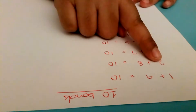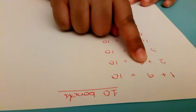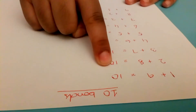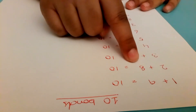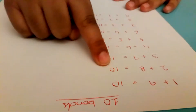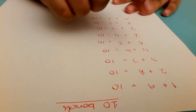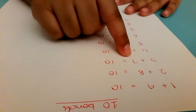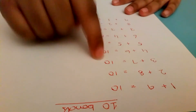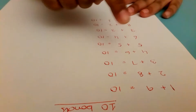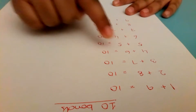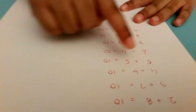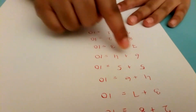1 is the friend of 9 making 10. 2 is the friend of 8 making 10. 3 is the friend of 7 making 10. 4 is the friend of 6 making 10. 5 is the friend of 5 making 10.